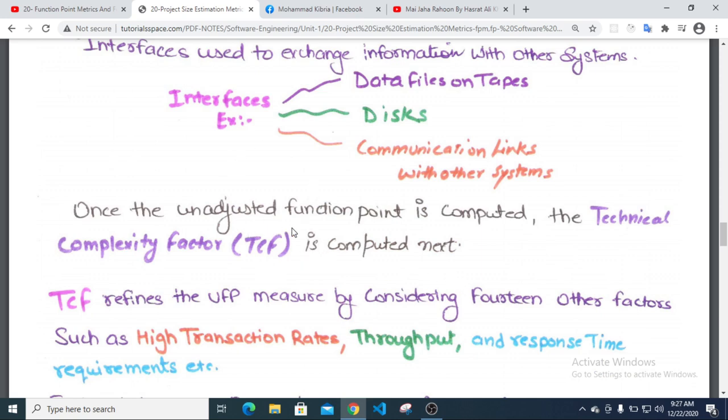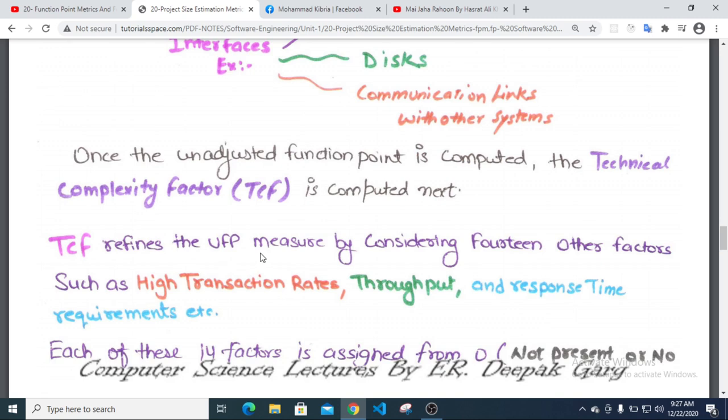The Technical Complexity Factor (TCF) is computed next. TCF refines the UFP measure by considering 14 other factors such as high transaction rates, throughput, and response time requirements.